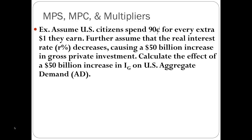For example, let's assume citizens spend 90 cents of every extra dollar they earn. We're going to further assume the interest rate decreases, causing a $50 billion increase in gross private investment. We're going to calculate the effect of that $50 billion increase in gross private investment on U.S. aggregate demand. This is a fairly standard multiplier problem.